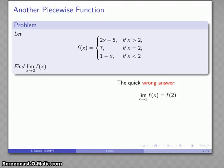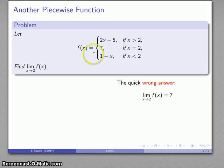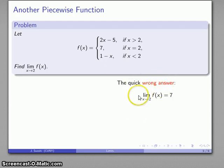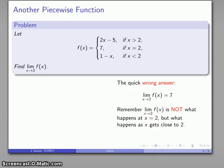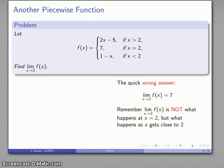Let's start with the wrong way of doing this. We might just plug in x = 2 into the function. At x = 2, the definition says f(x) = 7. So a wrong answer would be that as x gets close to 2, my function value gets close to 7. This is wrong because the limit as x approaches 2 is not what happens at x = 2, but rather what happens to f(x) as x gets close to 2.